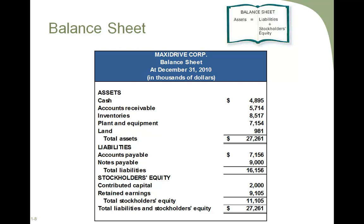The figures are in thousands of dollars as of December 31st, 2010 — again, that point in time, that snapshot. Maxi Drive Corporation has total assets of $27,261 thousand, which is $27,261,000 in reality. Remember to add three zeros when the statement is expressed in thousands. Total assets are made up of cash, accounts receivable, inventory, plant and equipment, and land. Total liabilities are made up of accounts payable and notes payable, totaling $16,156,000.